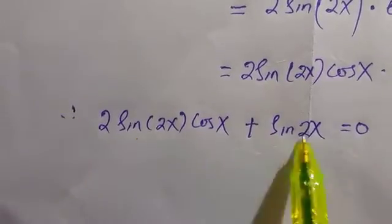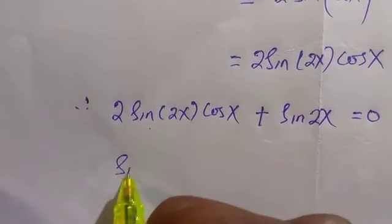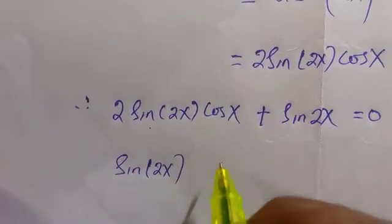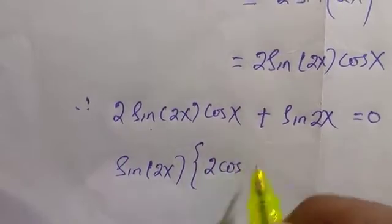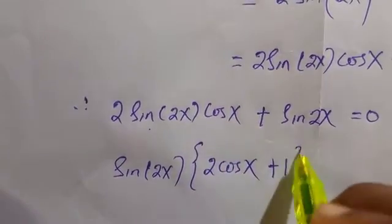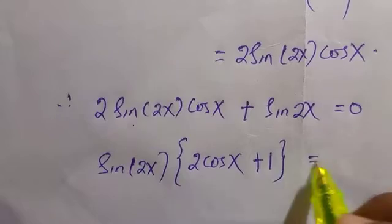Let's factor out sin(2x) since it is common to both terms. Then we are going to have sin(2x)[2cos(x) + 1] = 0.